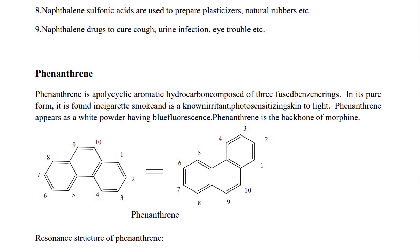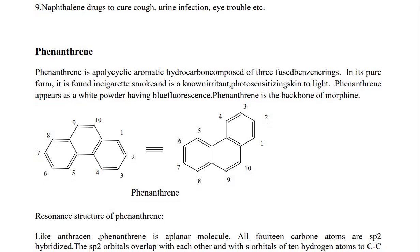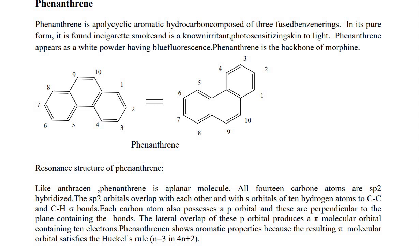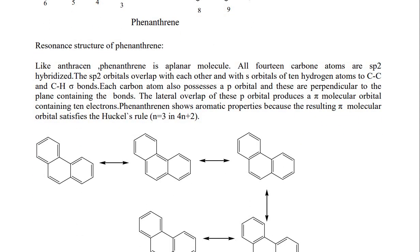Phenanthrene is a polycyclic aromatic hydrocarbon composed of three fused benzene rings in angular arrangement. In pure form it appears as a white powder with blue fluorescence. It is formed in cigarette smoke and is known as an irritant and photosensitizer of skin to light. Phenanthrene is the backbone of morphine. The numbering positions are 1 through 10.